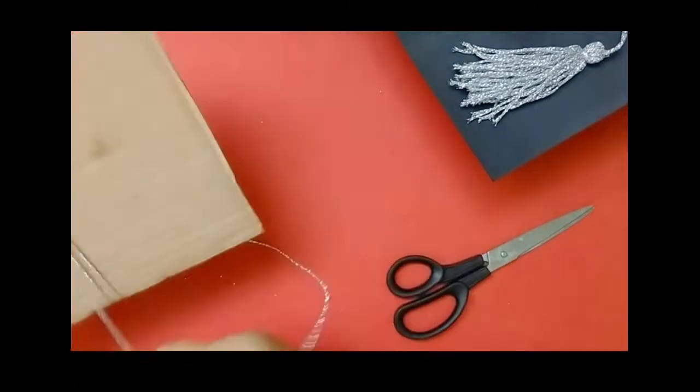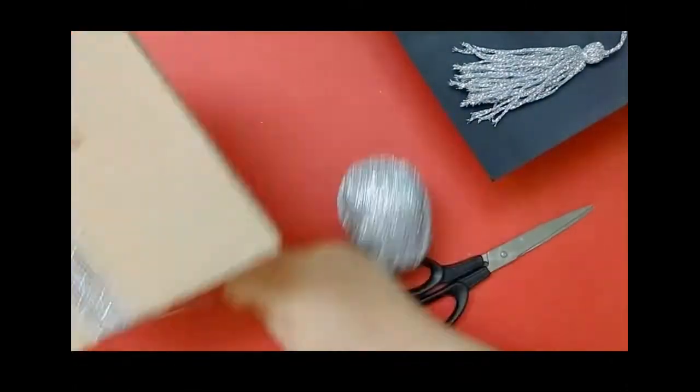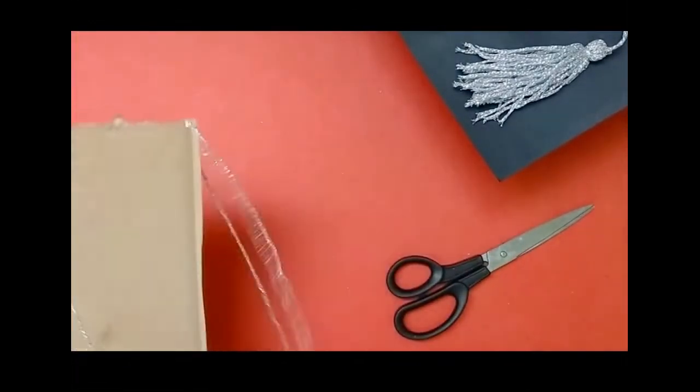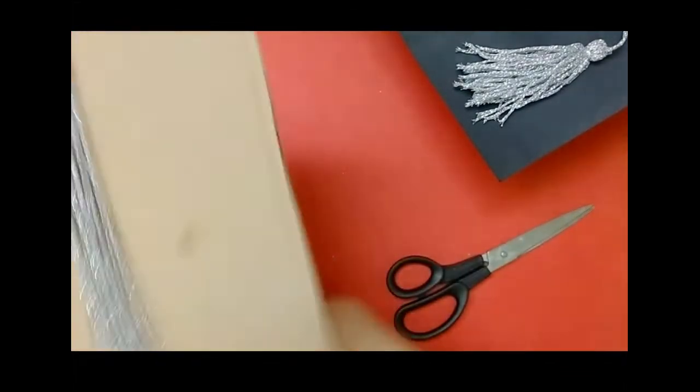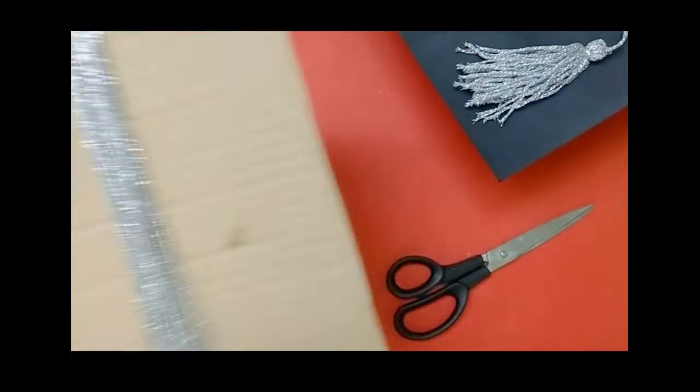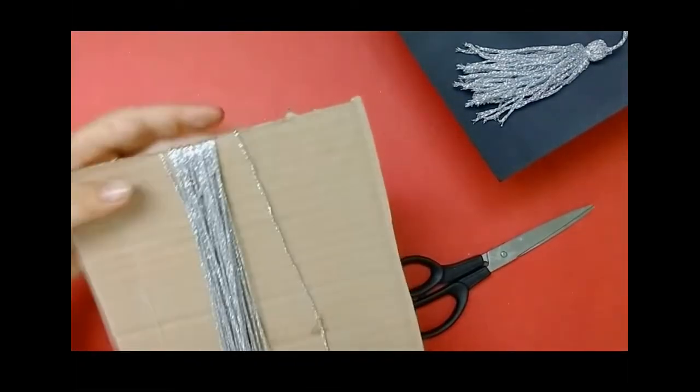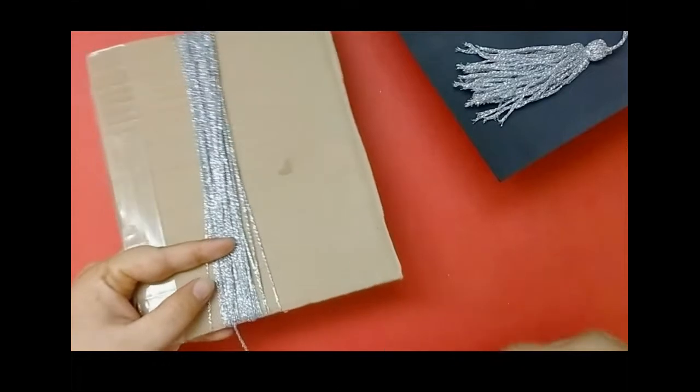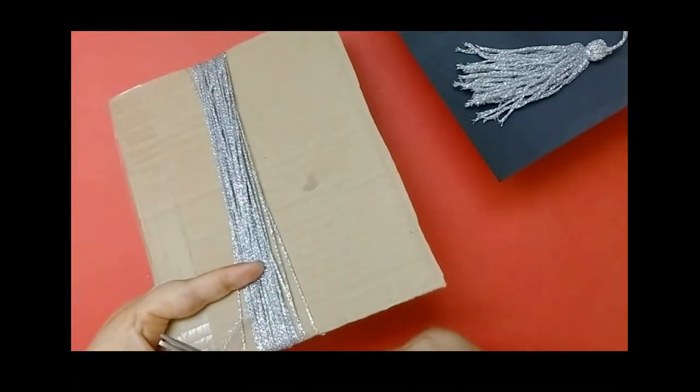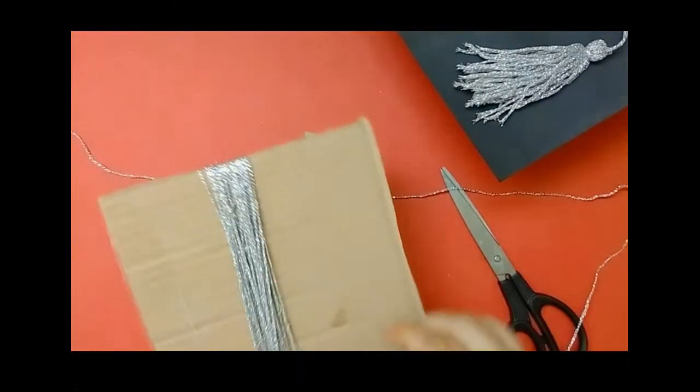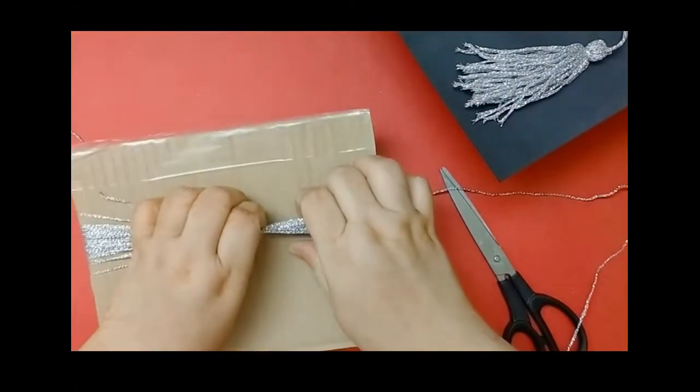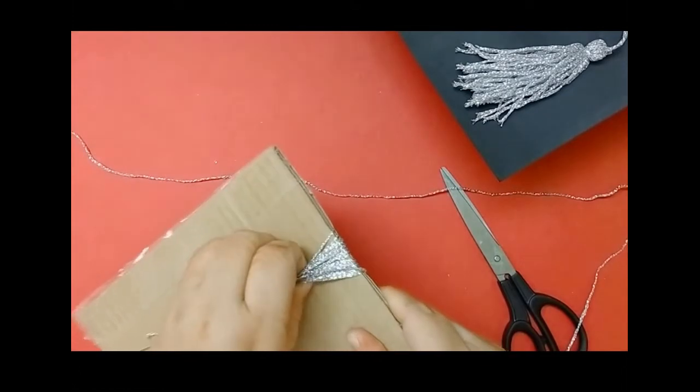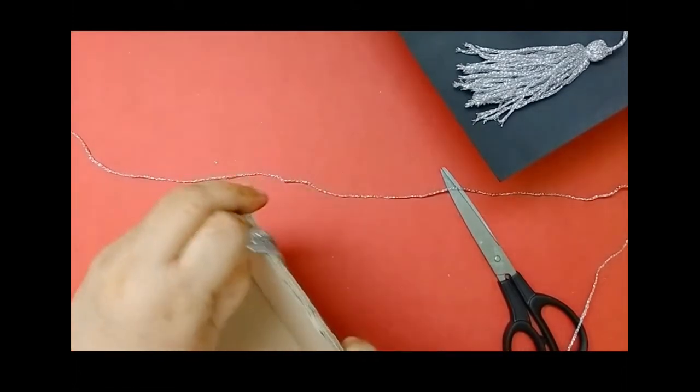Wrap it around till the desired thickness is achieved. How fluffy you want it depends on that. If you want it to be really fluffy, you will make a couple more rounds. So I think this is fine for me. So what I'm going to do is go ahead and cut this end off where I finished. And now we are going to slide this off. It should be easy to slide.